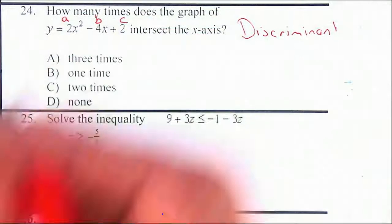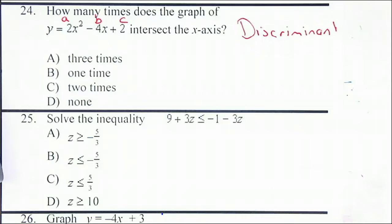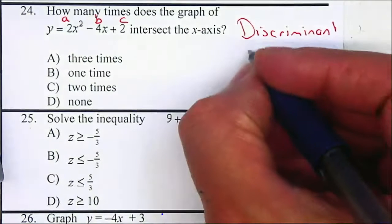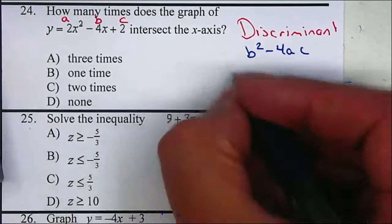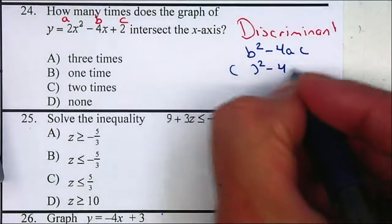So place a, b, and c. Do you remember your discriminant? It's b squared minus 4ac. We're just going to plug it in. b squared minus 4ac.